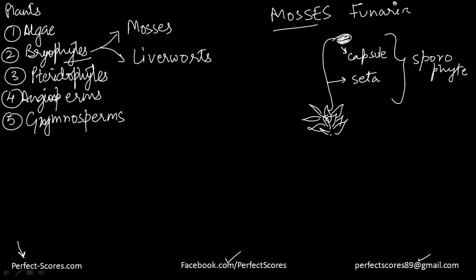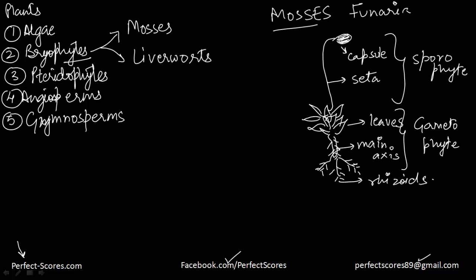These leaves are there and then you have a main axis which is basically a little form of a root, and then you have rhizoids which are like small branched parts of this particular moss. The upper portion was called a sporophyte; the lower portion is called a gametophyte. This is where the leaves are. This central part is called the main axis and these are the rhizoids.